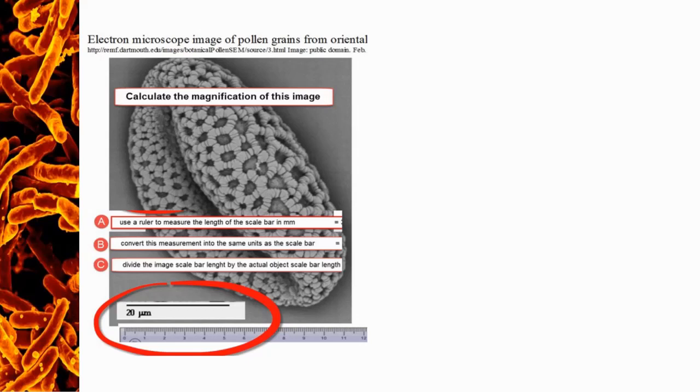So remember, the equation we're using is magnification equals image size over actual size. And we're trying to solve this equation for magnification of this image. What that means is we have to have a number or value to plug in for the image size and a value for the actual size.